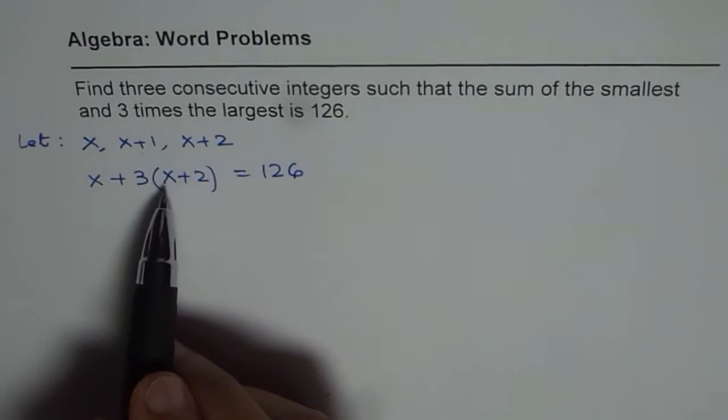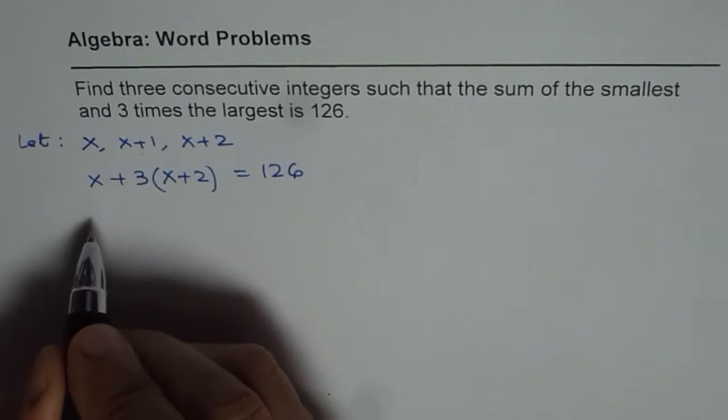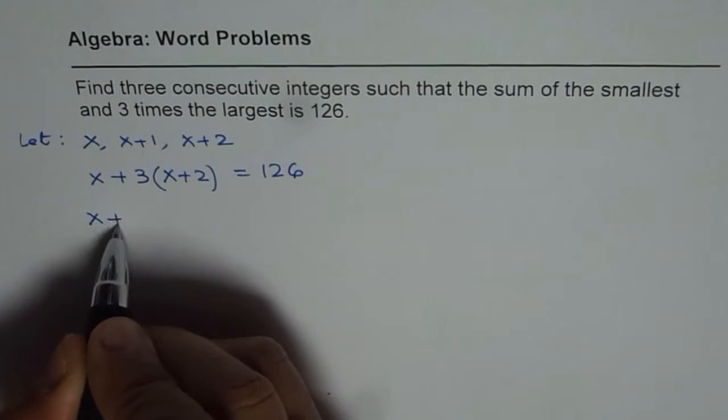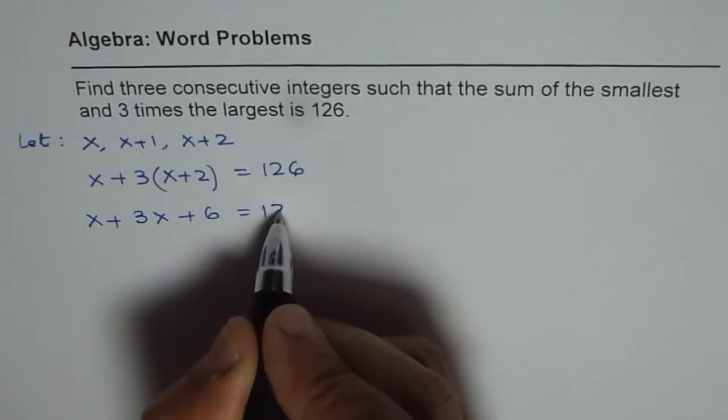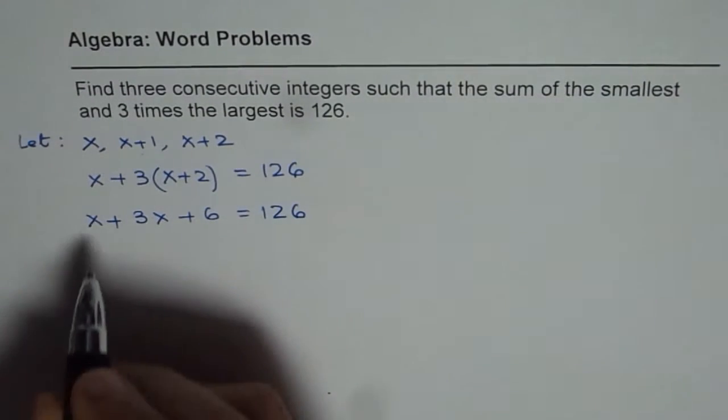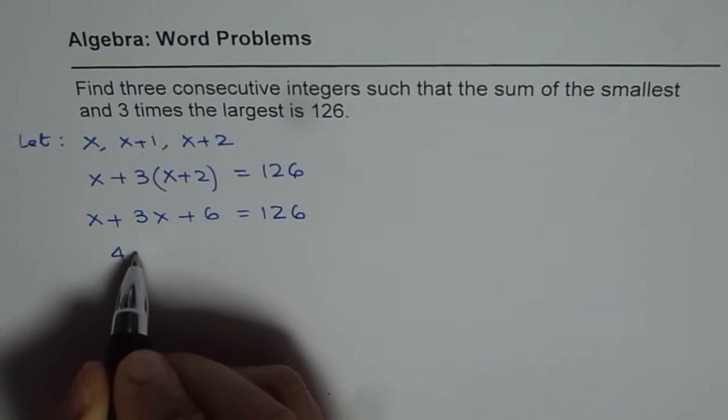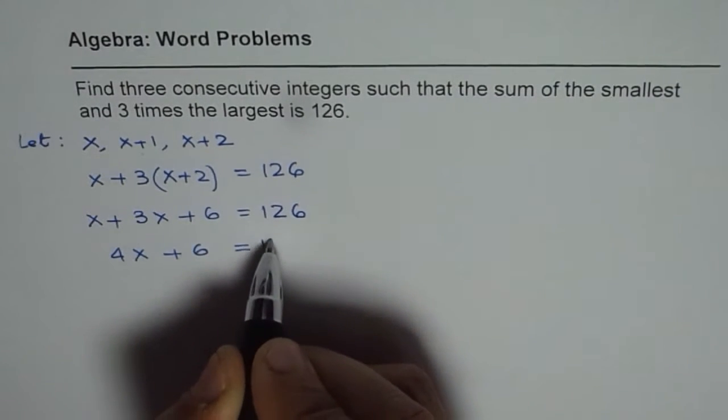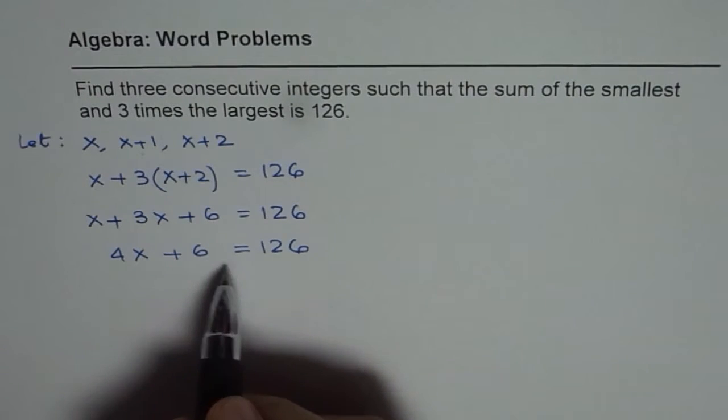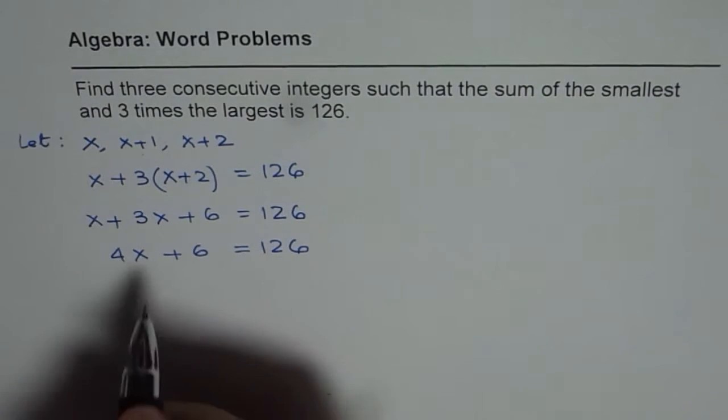Now this equation is in one variable, we can always solve for x. Let's expand using distributive property. So we get x plus 3x plus 6 equals 126. We can combine the like terms: 4x plus 6 equals 126. Now we can subtract 6 from both the sides, so if we do that we get 4x.